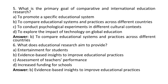Question 5: What is the primary goal of comparative and international education research? A. To promote a specific educational system. B. To compare educational systems and practices across different countries. C. To conduct psychological experiments in different cultural contexts. D. To explore the impact of technology on global education. Correct answer is B: To compare educational systems and practices across different countries.